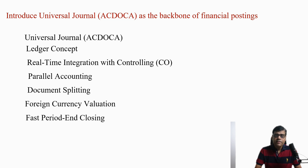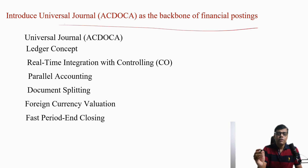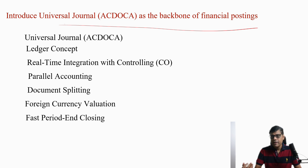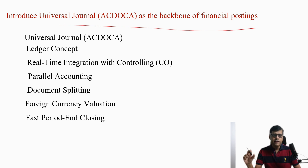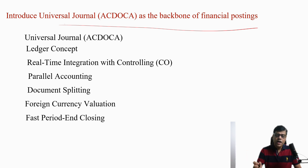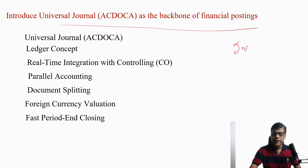Now let's understand the concept of universal journal — the ACDOCA table. The universal journal is the backbone of all your FI reporting or controlling reporting; everything is part of your universal journal in S4 HANA. In the old system we had many different tables. If I needed to pull customer receivable data, there was a separate BSID table; for supplier open items, a different table. We had index tables, aggregate tables, and total tables — very complicated, not only for developer consultants but also for business users.